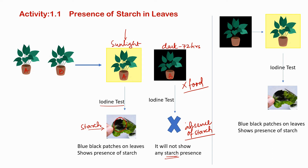Now we take the same Plant B and keep it in the sunlight. After some time, we perform the iodine test on Plant B, and it also shows blue and black patches. That means after keeping the plant in sunlight, it makes food, produces carbohydrates, and stores starch in the leaf — confirming the presence of starch.